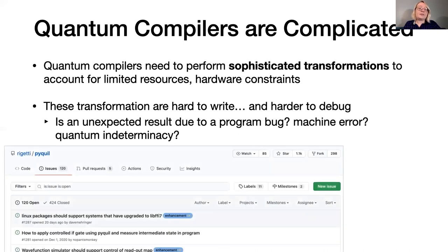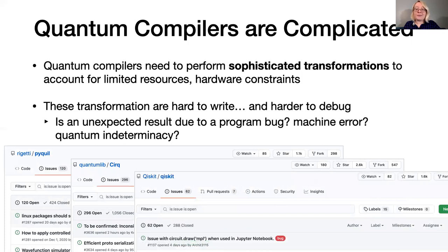Here are the GitHub issue pages for three popular quantum programming frameworks, PyQuil, Cirq, and Qiskit. As you can see, the community actively finds bugs in the programming stack, reinforcing our claim that this software is hard to get right.